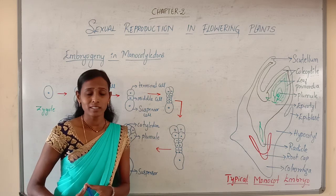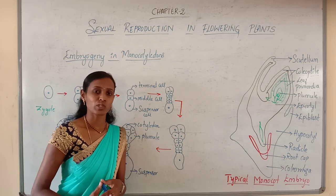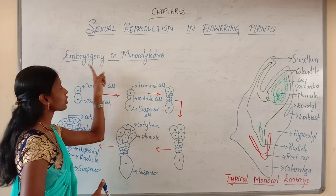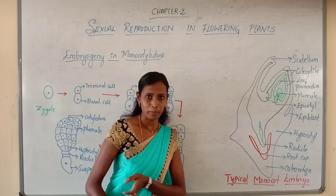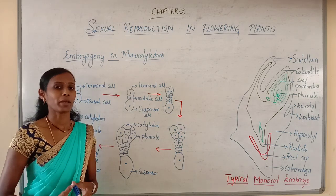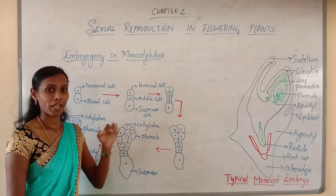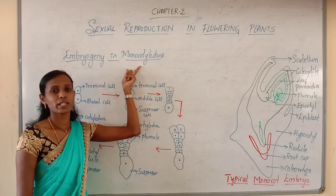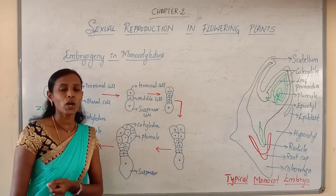Hello students, welcome back to my channel. In the previous class, we discussed embryogeny in dicotyledons and the structure of a typical dicot embryo. In this class, we are going to discuss embryogeny in monocotyledons as well as the typical monocot embryo. Embryogeny is the process of formation of an embryo from a zygote, and now we are discussing this process in case of monocotyledons.